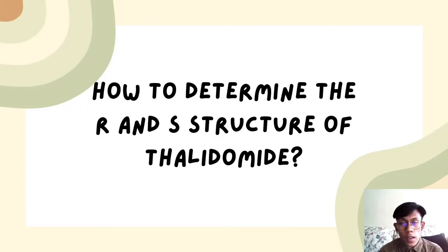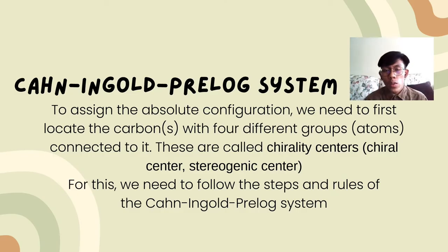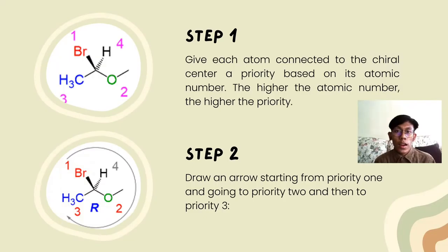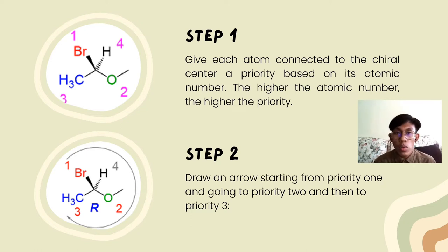Since we have discussed that there are two structures of thalidomide, now we are going to discuss how to determine them — the R and S structures. In order to identify whether it is the R or S structure, we are going to use the Cahn-Ingold-Prelog system. The first thing we need to do is identify the carbon that is attached to four different atoms or groups, known as the chiral carbon. Next, we must number the ligands according to their atomic number, where the atom or group with the highest atomic number is the highest priority, and the one with the lowest atomic number is the least priority.